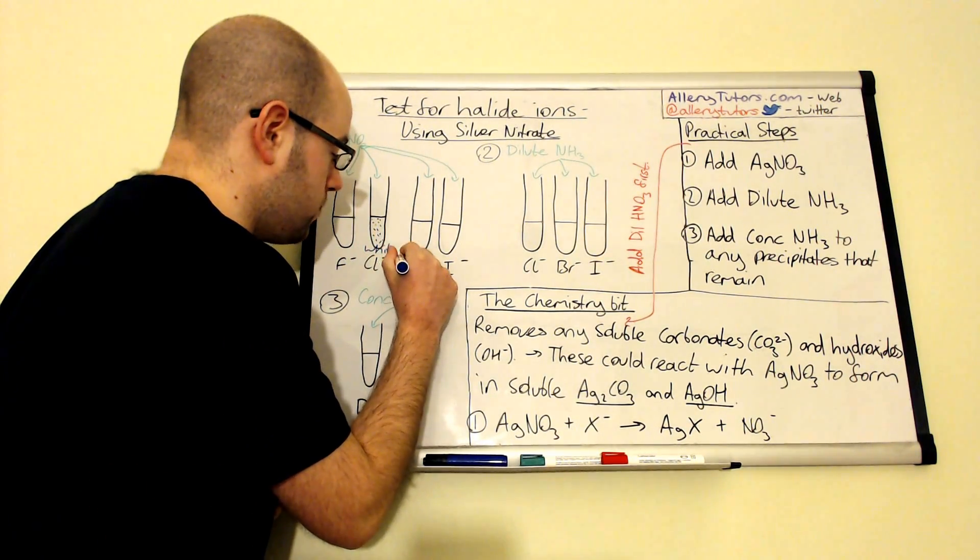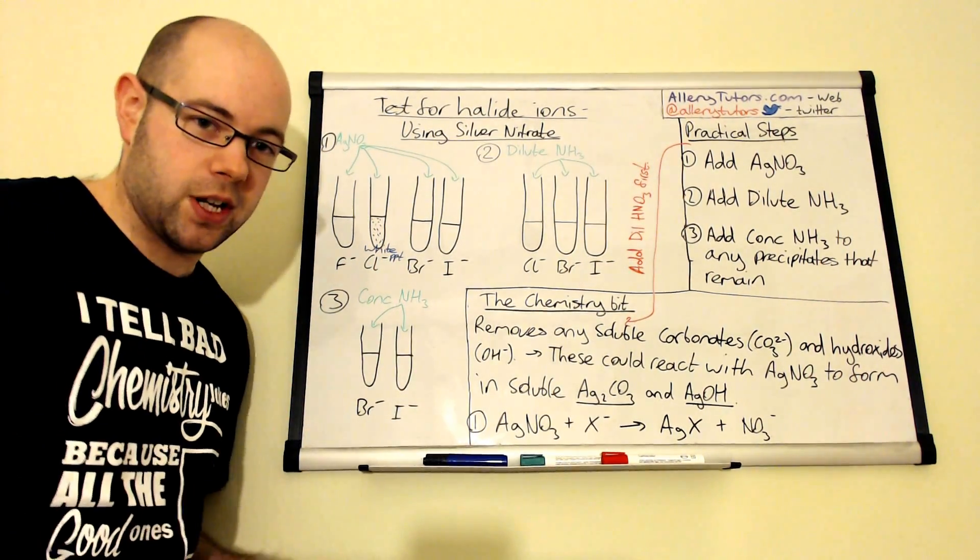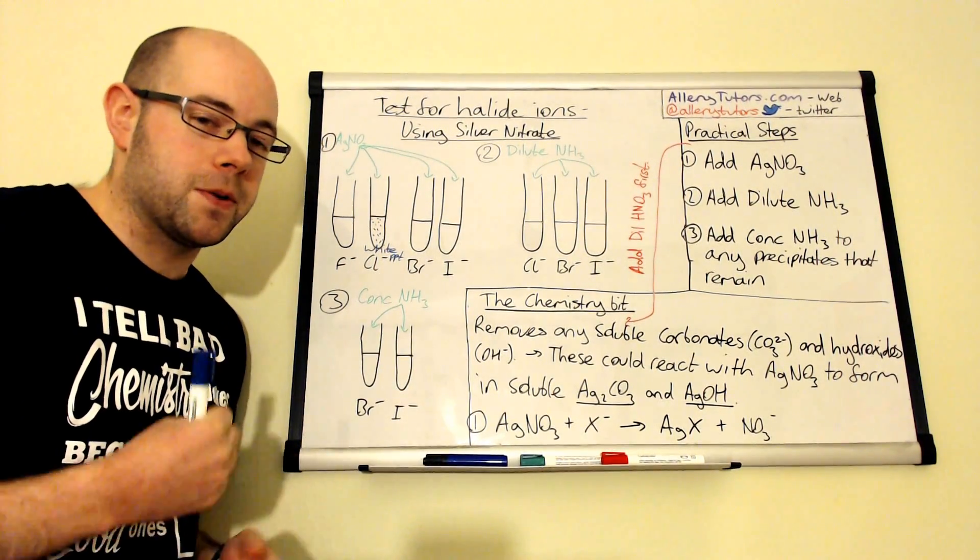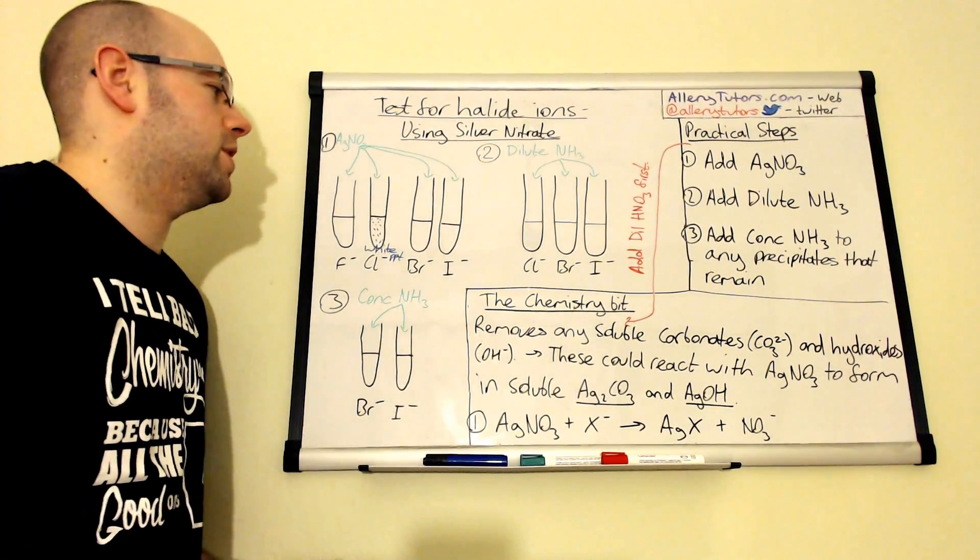It is really, really important that you label it as a precipitate. When you do this reaction, don't say it turns white. You've got to be specific. Make sure you say a white precipitate is formed in this reaction.